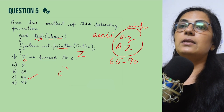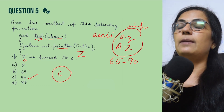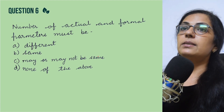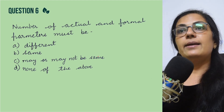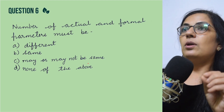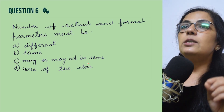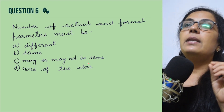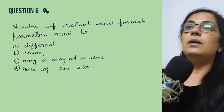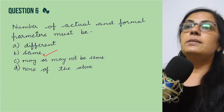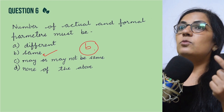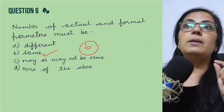The next question: the number of actual and formal parameters must be — different, same, or may or may not be same? Actual parameters should always match formal parameters in both number and data types. So the correct answer is same.